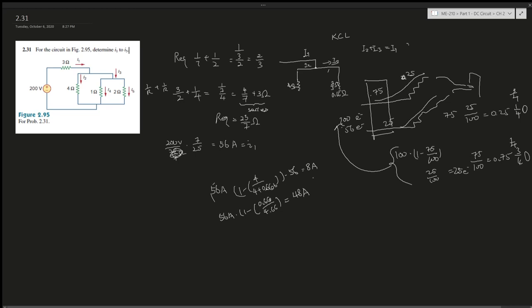So 48 amperes is going through I2. Since 4 ohms is much bigger than 0.66 ohms, it makes sense logically that 8 amperes passes through the resistor with more resistance, and 48 amperes passes through the resistor with less resistance, which is 2/3 ohms - that's I3. Now we've found I1, I3, and it's time to find I4 and I5.